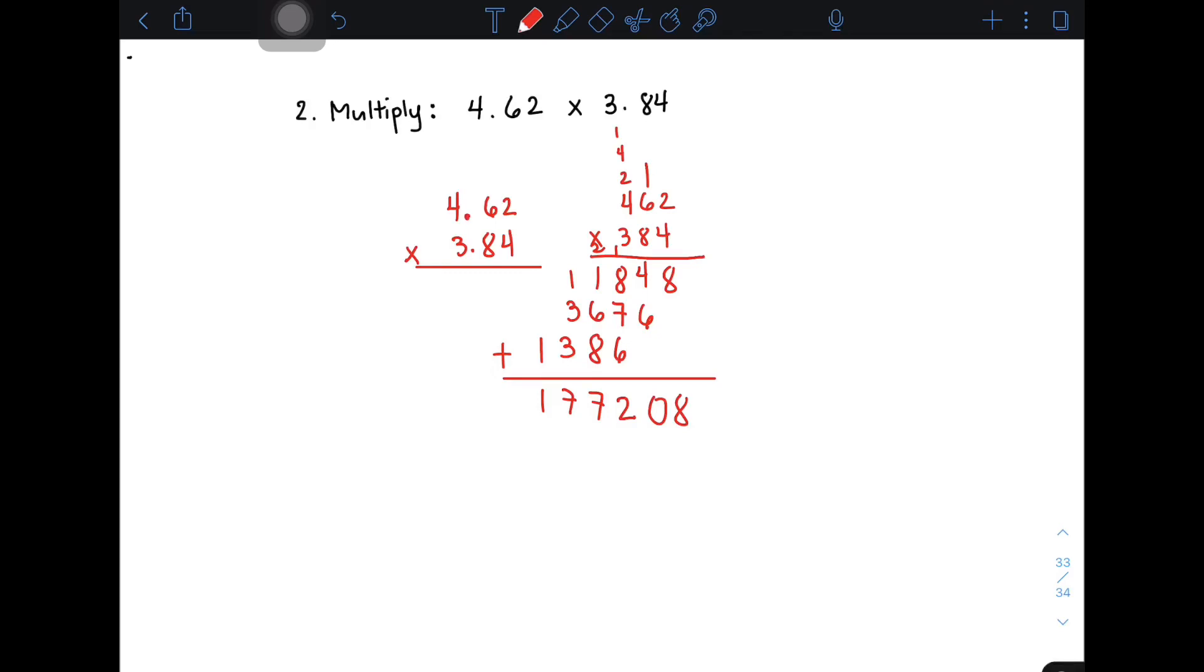For the final answer, you need to count the number of decimal places. From here, 1, 2, 3, 4. We have 4 decimal places. From this point, count 1, 2, 3, and 4. Stop here. The correct answer is 17.7208.